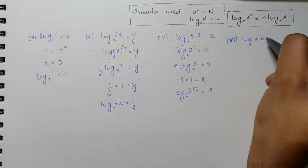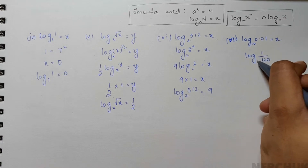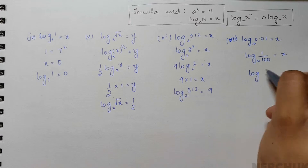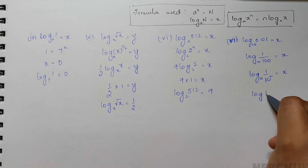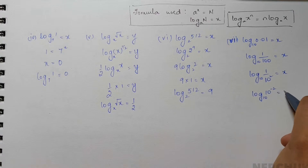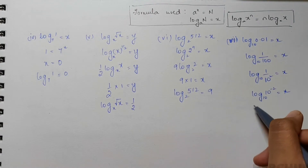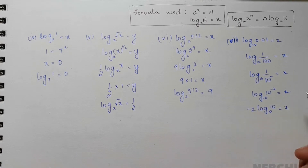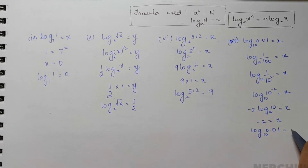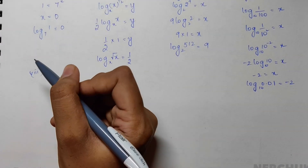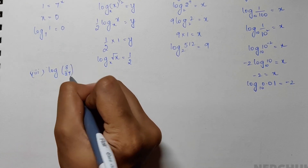For the seventh bit we have log 0.01 to base 10; let this equal x. 0.01 equals 1 by 100, so we have log of 1 by 100 to base 10. That is log of 1 by 10 squared, which equals log of 10 to the power minus 2 to base 10. Applying the formula log x to the power n equals n times log x, we get minus 2 times log 10 to base 10 equals x, which gives minus 2 times 1 equals x. Therefore log 0.01 to base 10 equals minus 2.